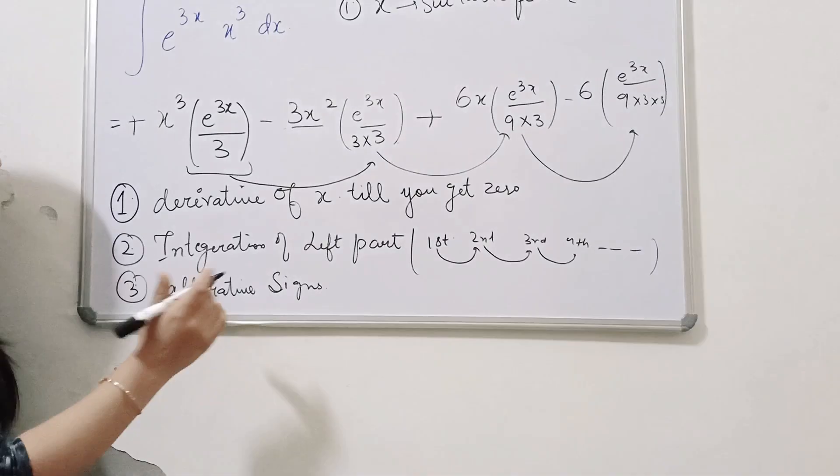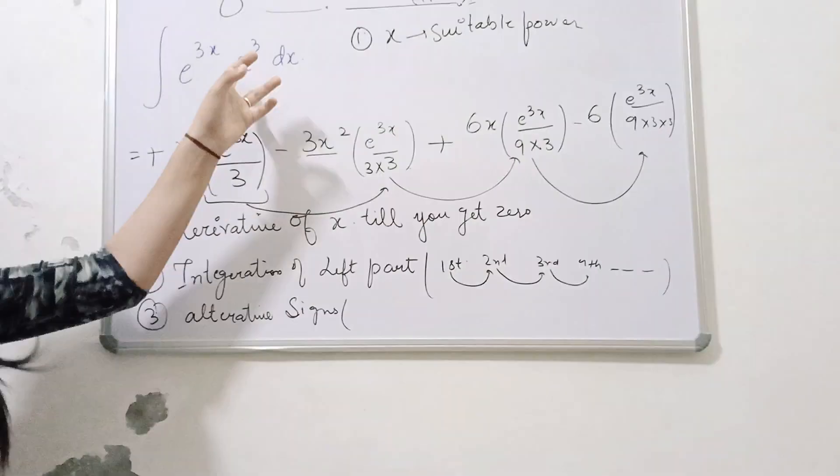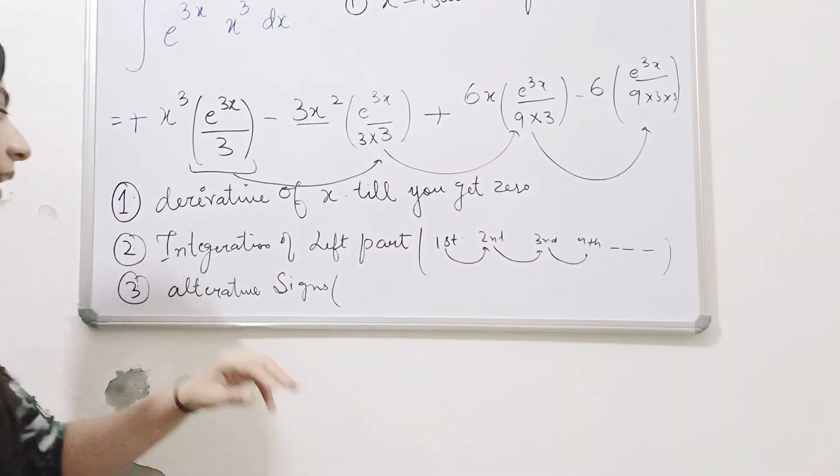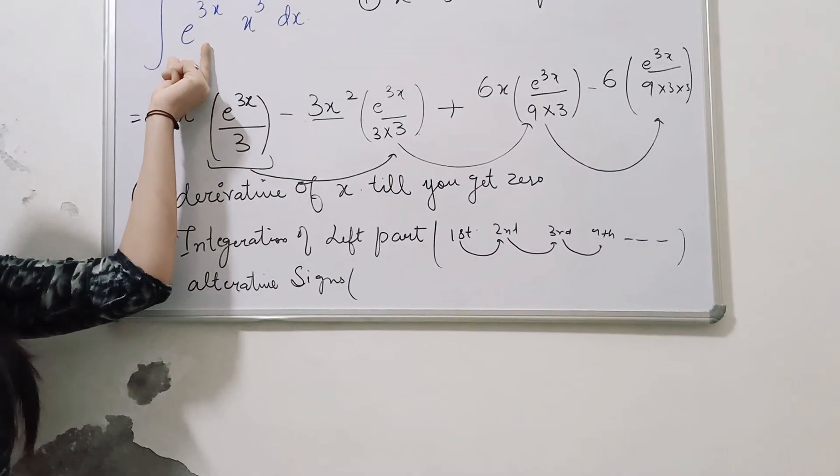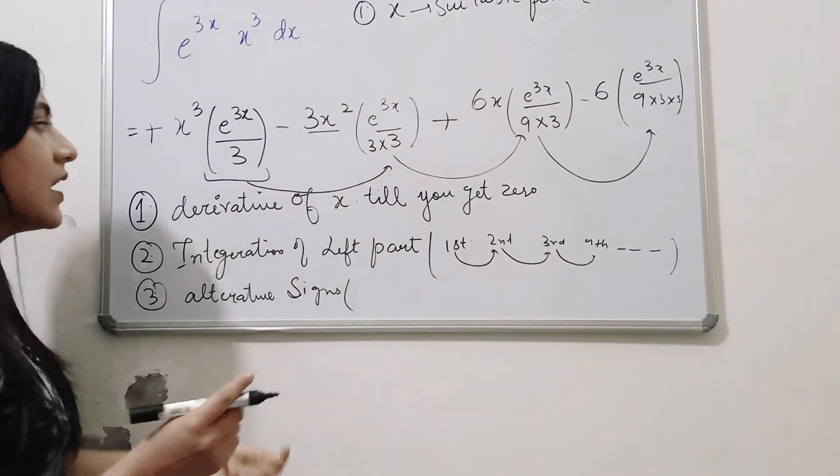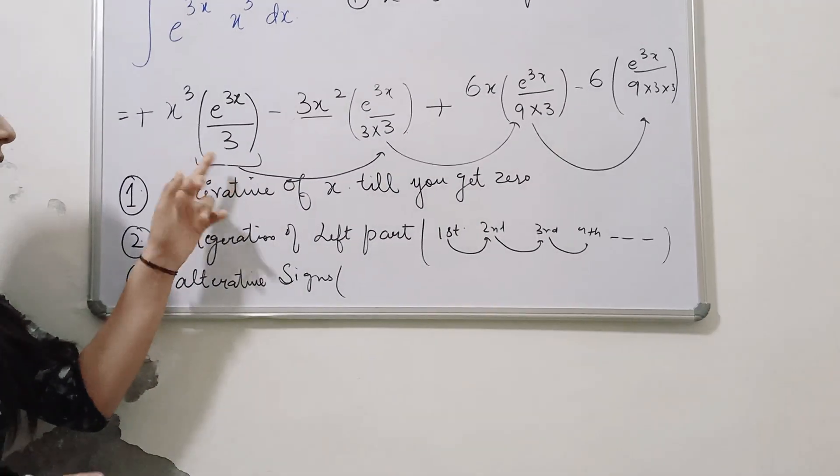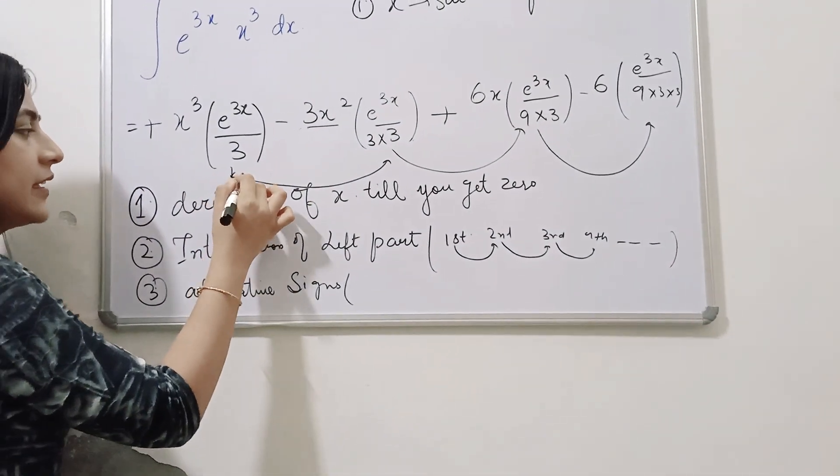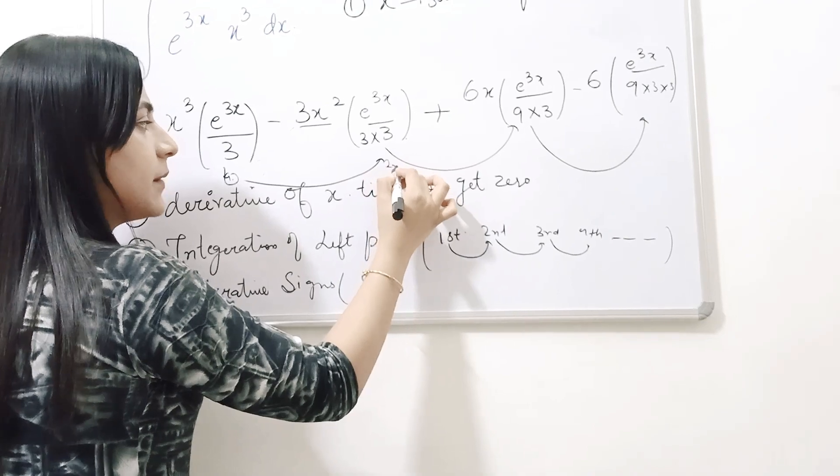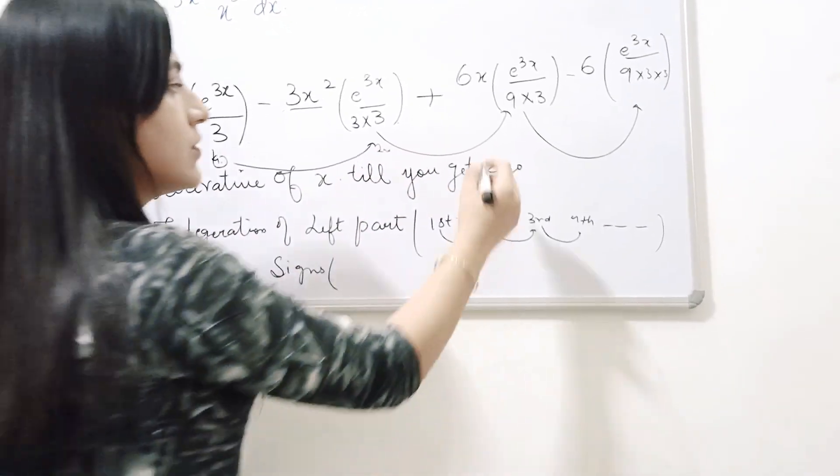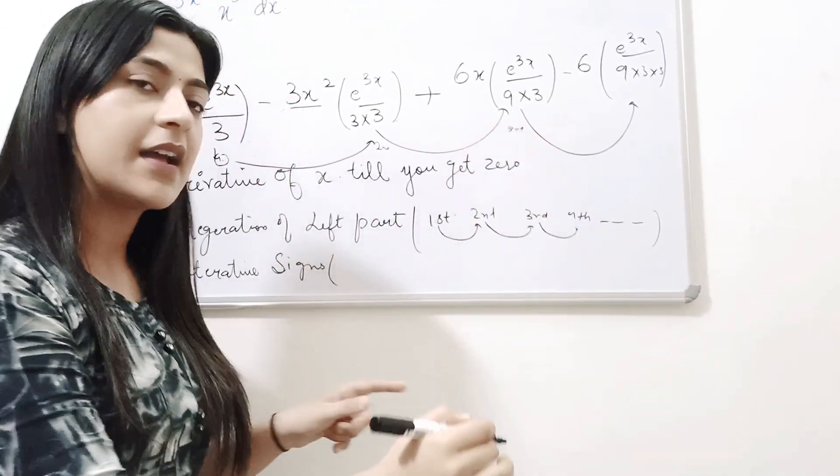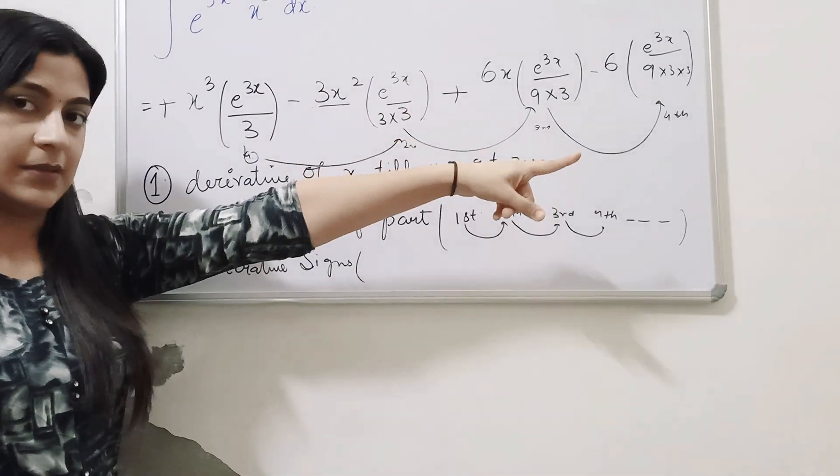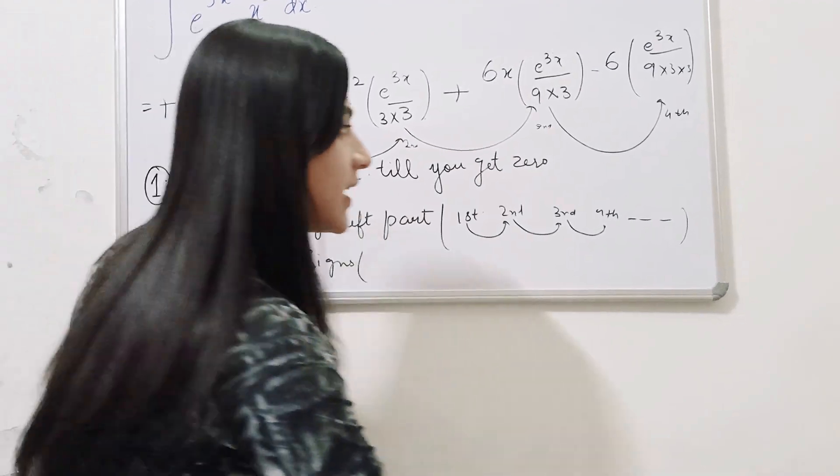So this is the algorithm, so first is you have to do the derivative of x, till you will get zero, and the second part is, joh paaath bach jahata hai, usko ap integrate karte jahiyye, bas. Kya chiz aapko jhaan me rakhni hai ki, obviously li, yeh chiz jhaan me rakhni hai ki, joh first me integration aya, usko, uski integration aap second me karoge, joh second me haya, uski third me karoge, joh third me haya, uski fourth me karoge, along with their constants. So this was the algorithm.